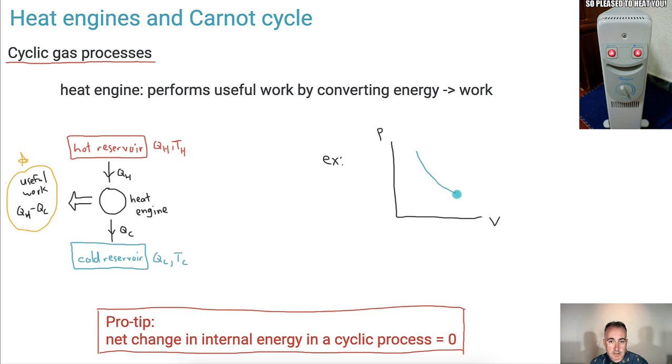So what is an example of a cyclic gas process? Well, it could be, if this is a PV diagram, I don't know, maybe it goes like this, and then maybe like this, and maybe like this. I'm just trying to draw straight, but I'm not very good at it. So let's say it goes like this. It repeats. It goes from here. Let's say we call this here A. It goes from A to B, then to C, then back to A, then to B, then to C, back to A. Basically, it keeps going like this.